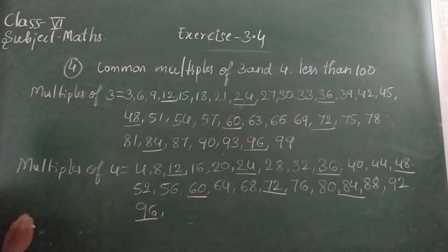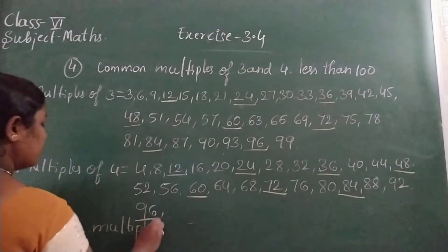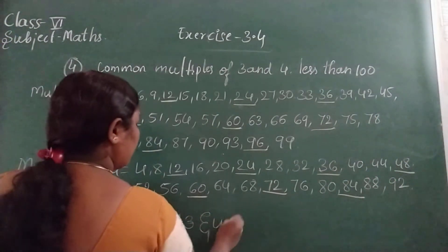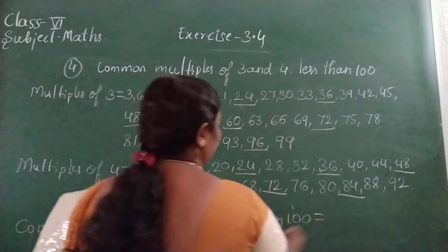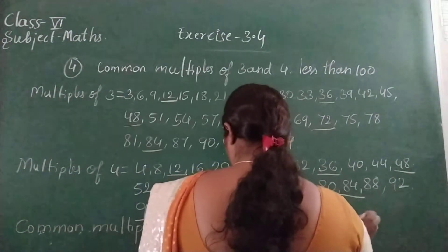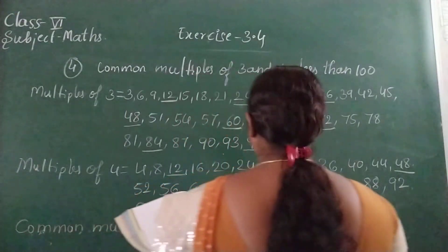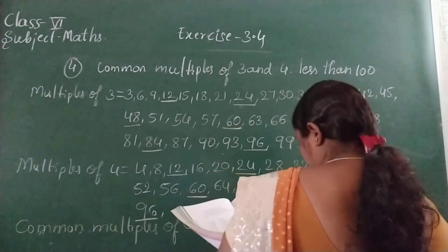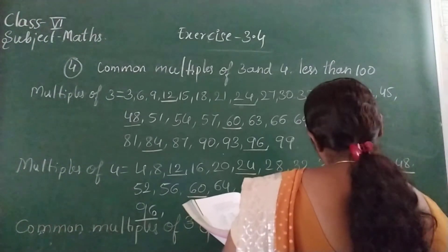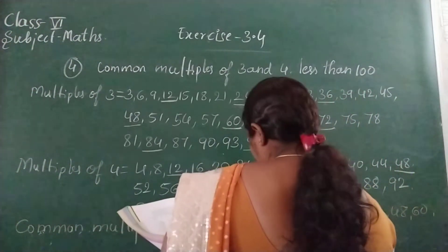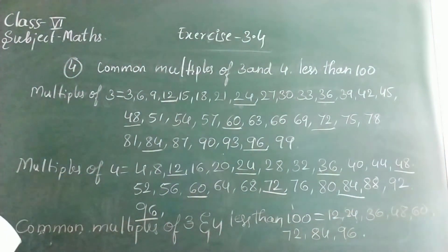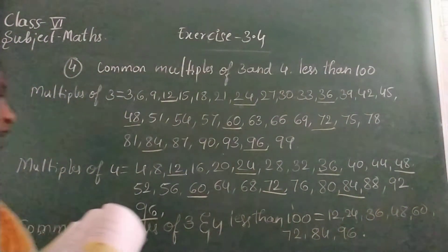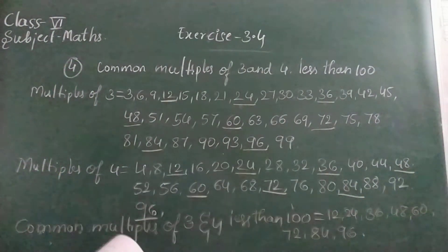So write the answer: Common multiples of 3 and 4 less than 100 equals 12, 24, 36, 48, 60, 72, 84, and 96. These are the common multiples of 3 and 4 less than 100. You also list out this.